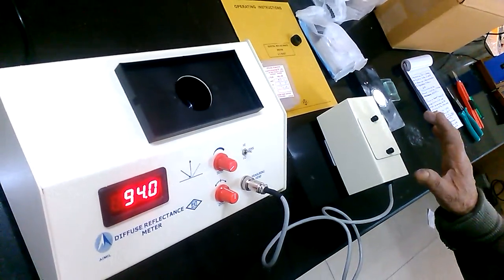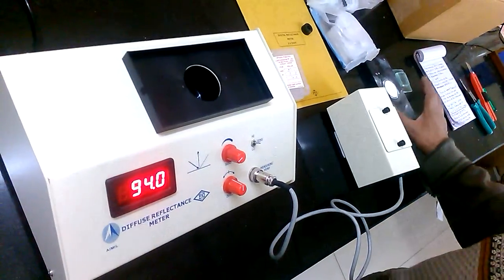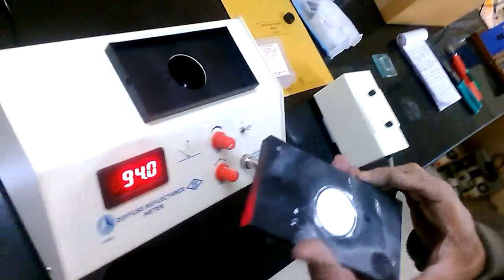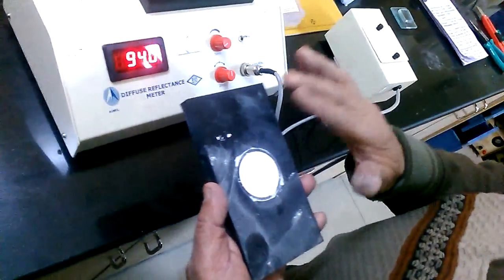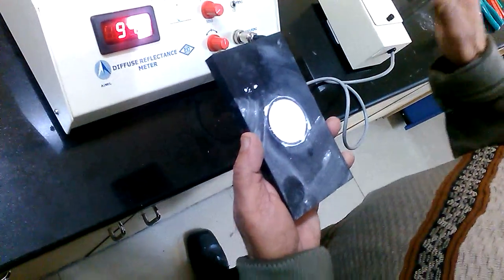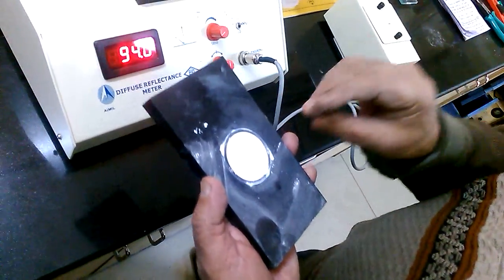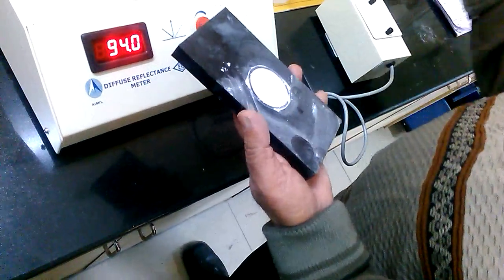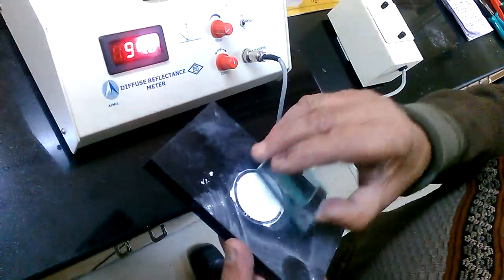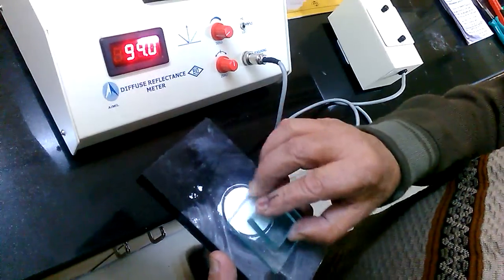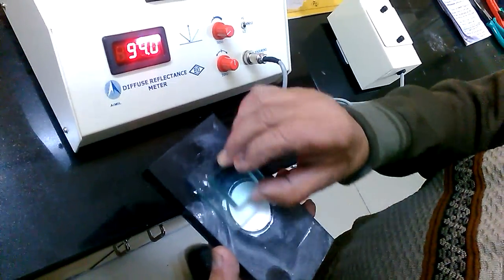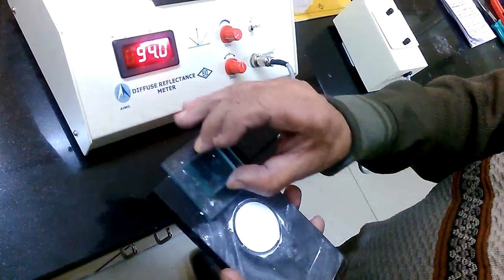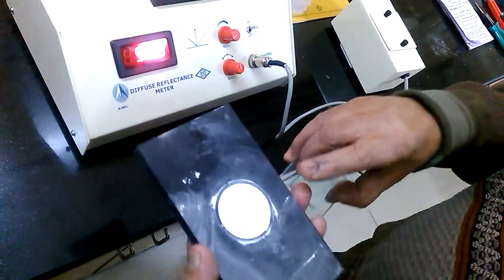You can check now the powder sample. Put the powder inside the cup and place with the help of pressure plate. Press it lightly to the smooth finish.